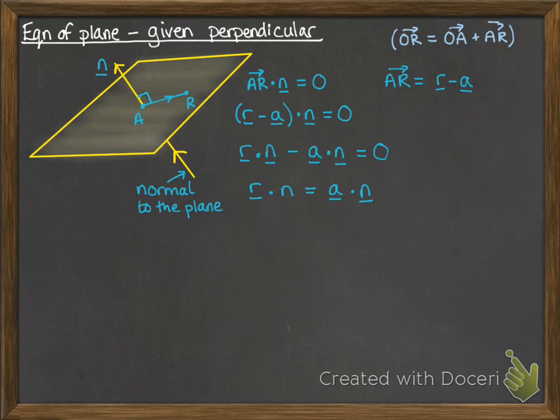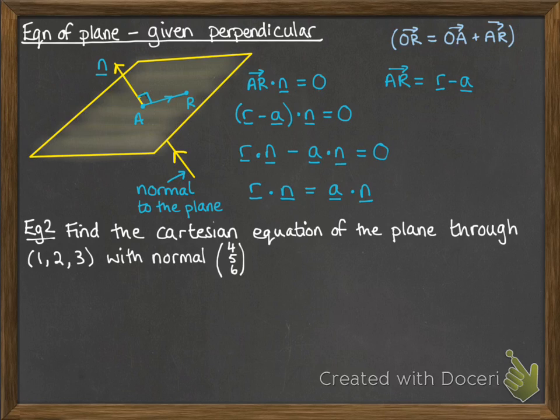So following that through from that scalar product, we get that the scalar product of R and N is equal to the scalar product of A and N. So let's put this into an example.